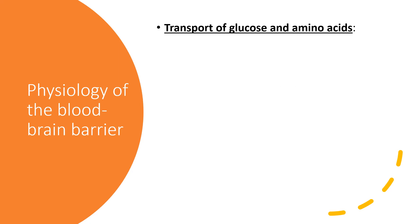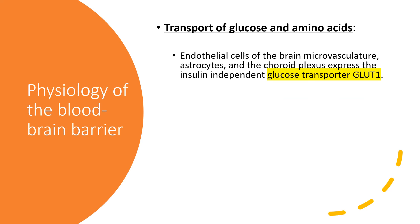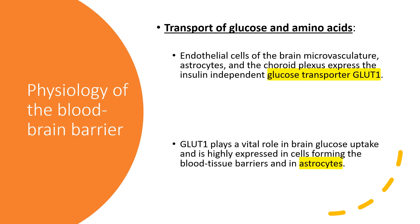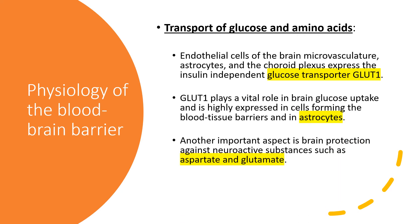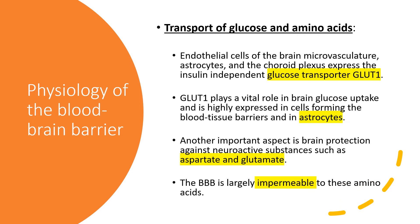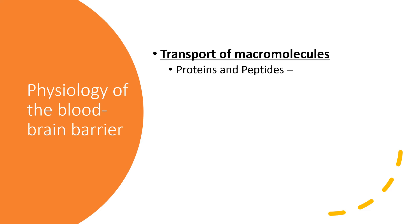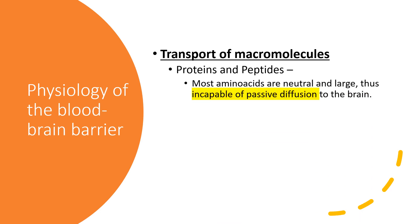For glucose and amino acid transport, endothelial cells of the brain, astrocytes, and the choroid plexus express an insulin-independent glucose transporter — GLUT1 — which plays a vital role in brain glucose uptake and is highly expressed in cells forming blood-tissue barriers and in astrocytes. The blood-brain barrier is also largely impermeable to neuroactive amino acids such as aspartate and glutamate, protecting the brain from excitotoxicity.